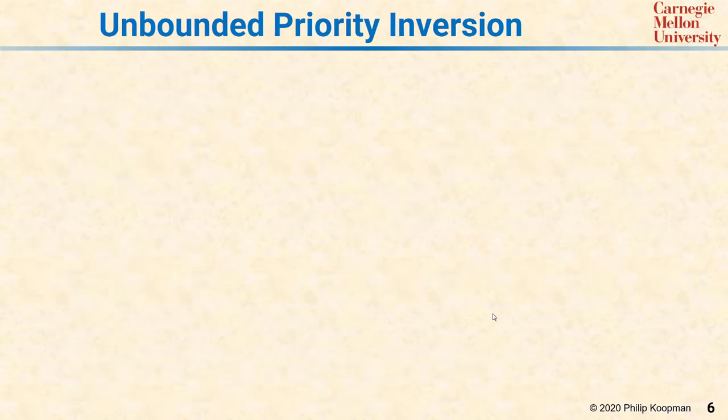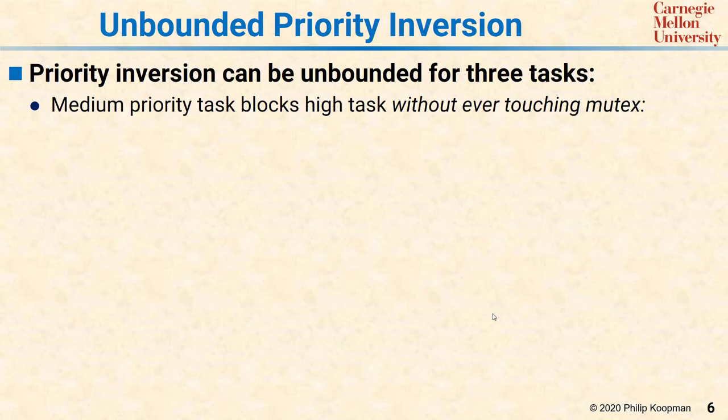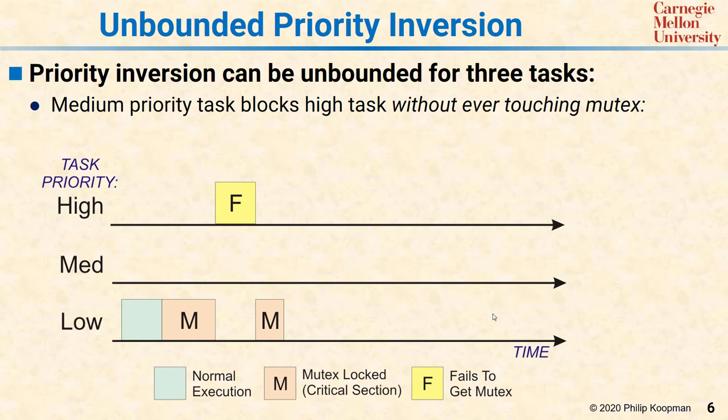But there's a critical problem: the previous picture admits a special case that can cause the high priority task to have unbounded priority inversion. If you have not two tasks but three tasks, you can get unbounded priority inversion — the high priority task might have to wait an extremely long time to get its chance to complete because the low priority task has the mutex.